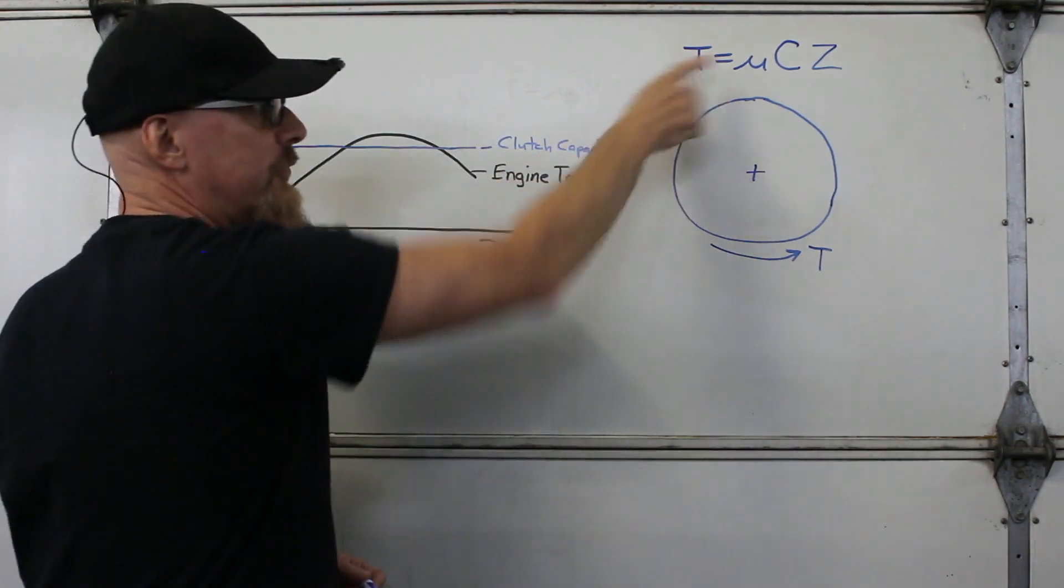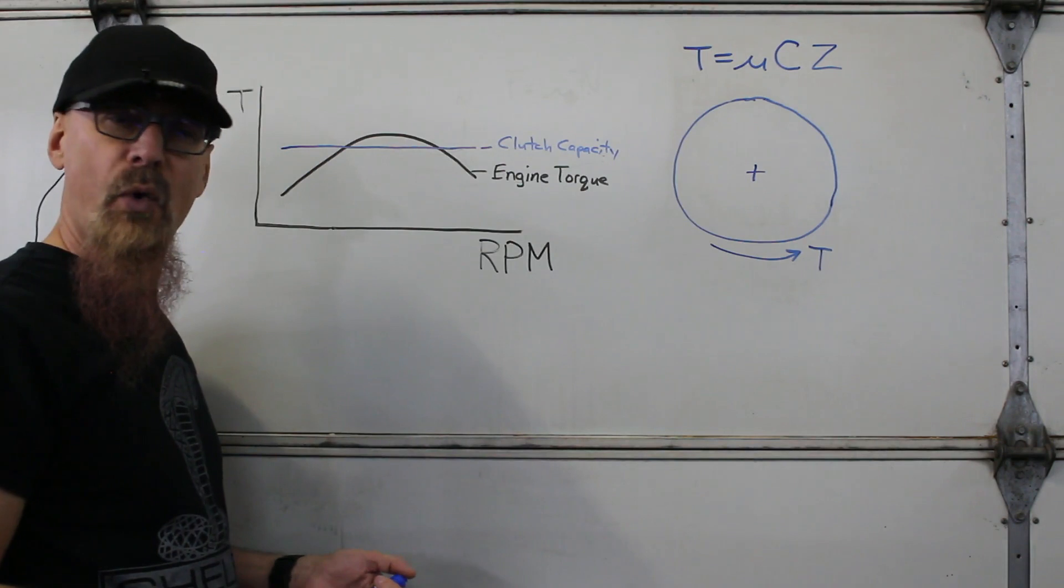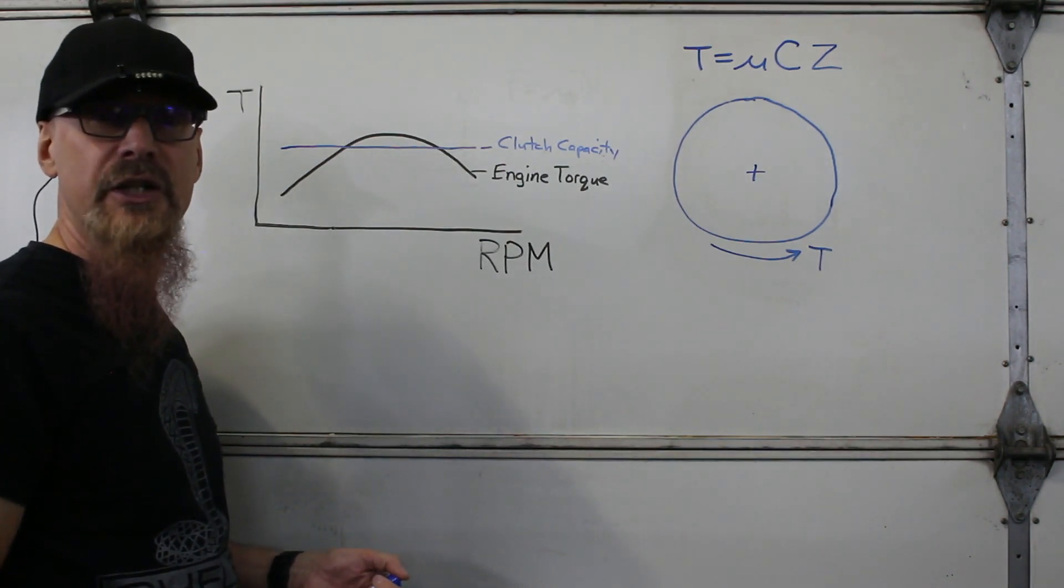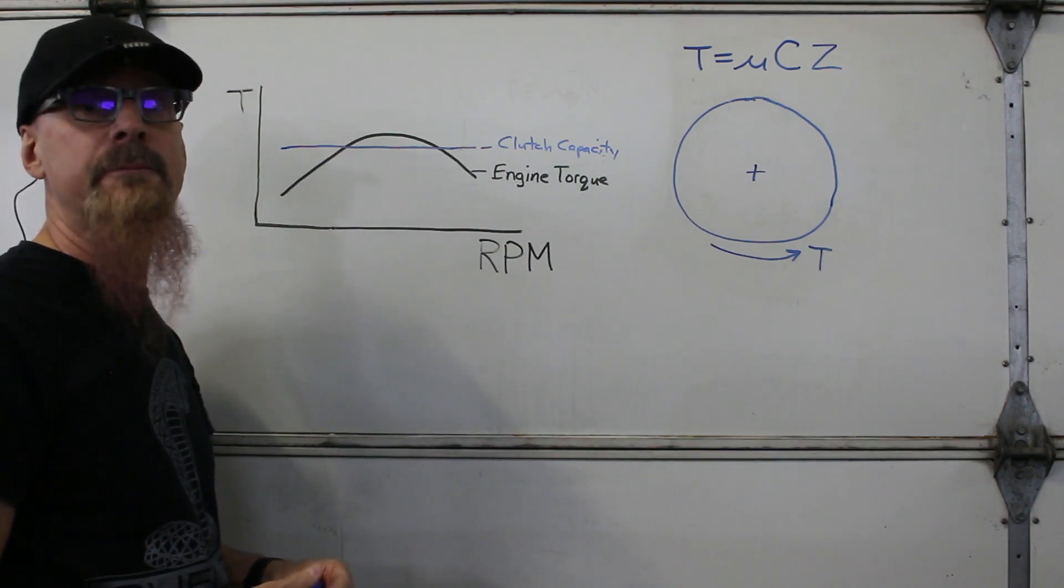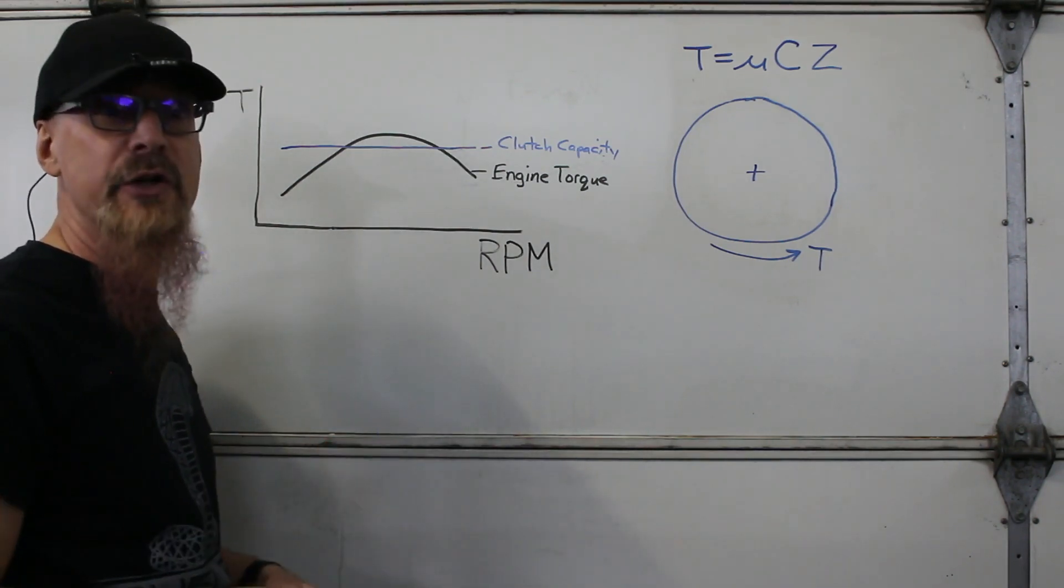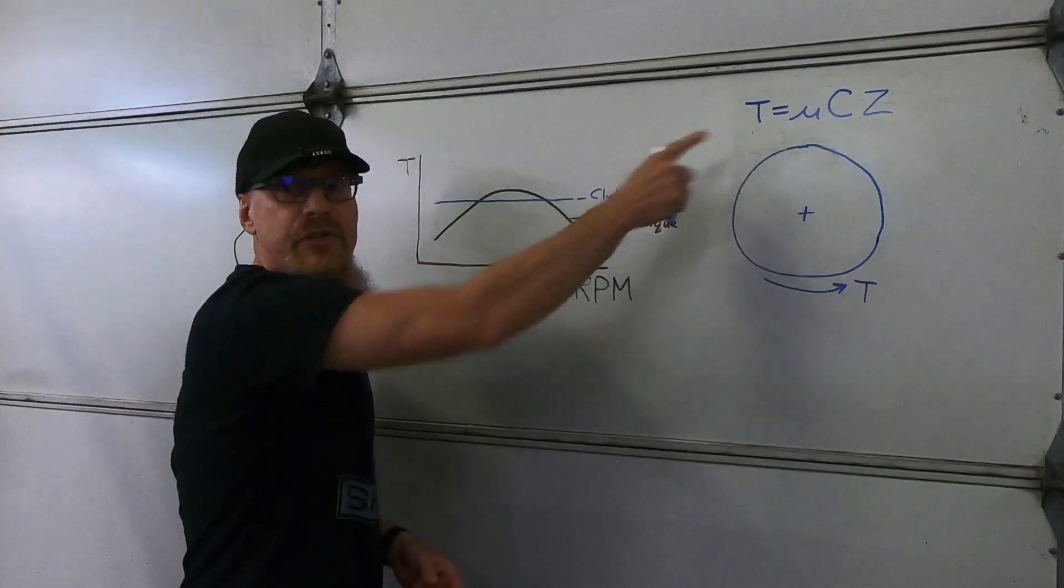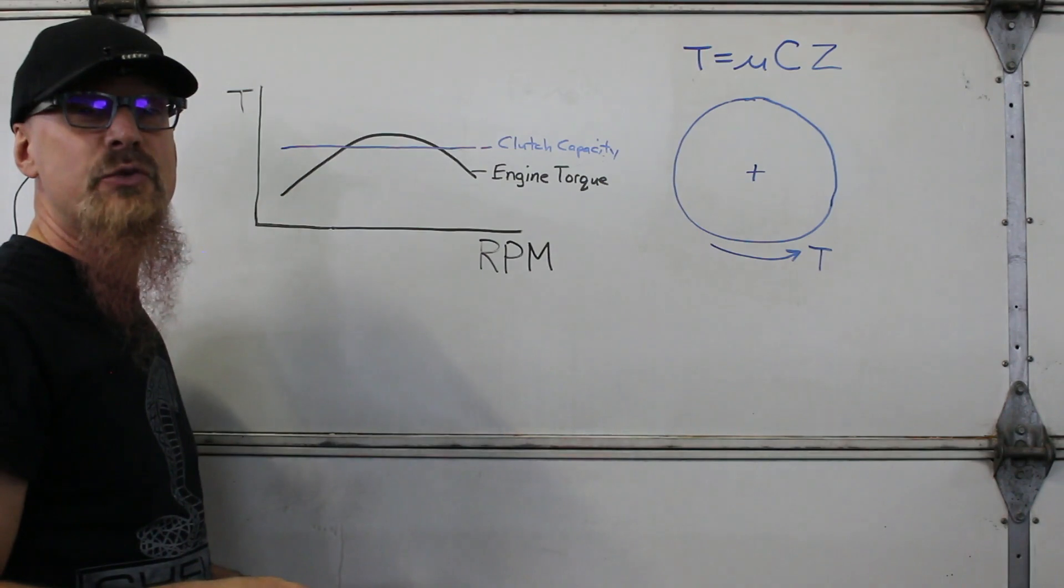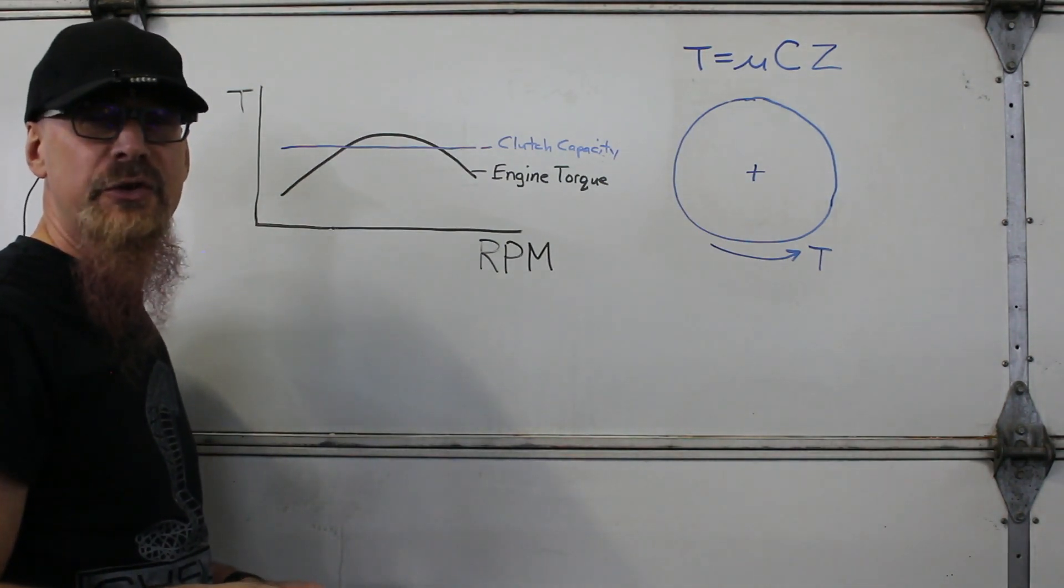Different clutch linings will have different friction coefficients. For street use you typically don't want a coefficient that's too aggressive so you have smooth clutch engagement and no clutch chattering. For racing we can tolerate some chattering so higher friction coefficients are typically used. But the thing about friction coefficients is they typically change with temperature and most clutch linings will lose coefficient with increasing temperature.